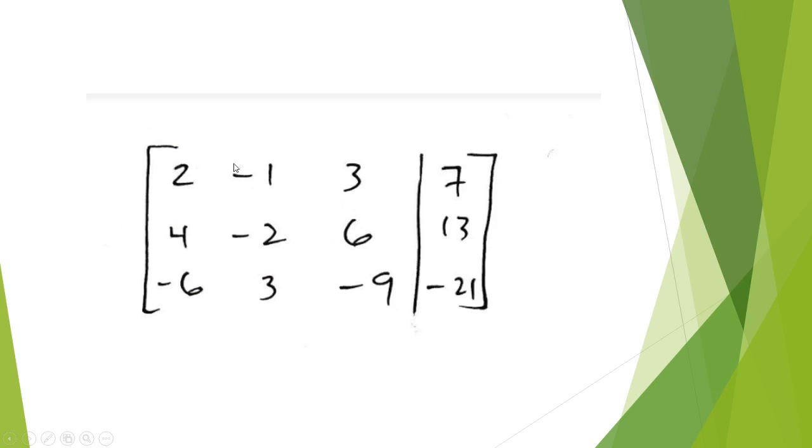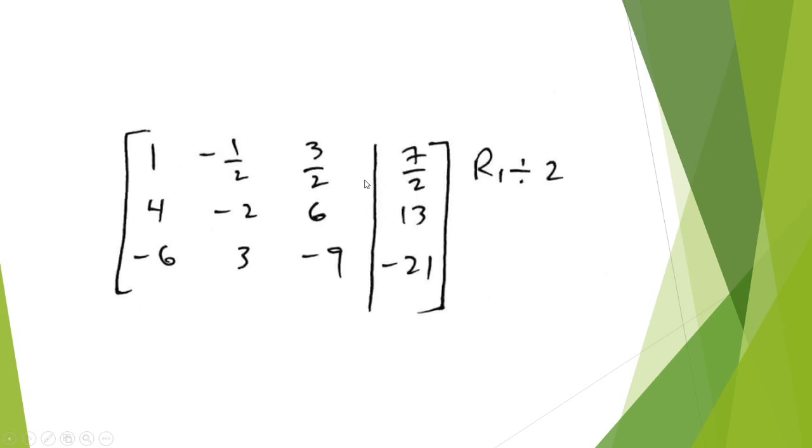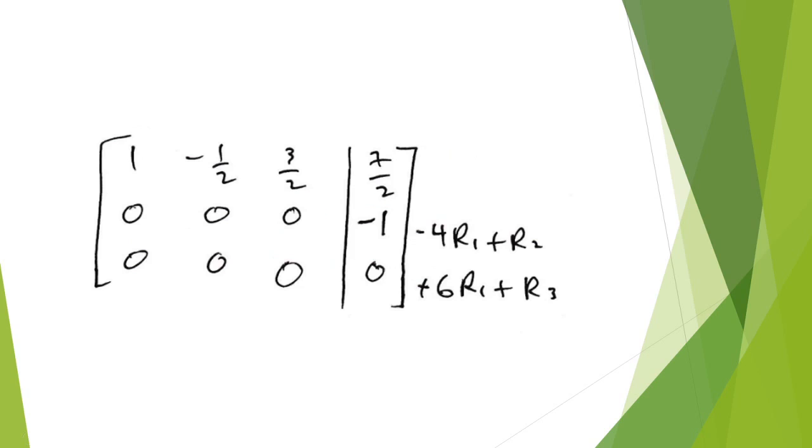negative 1 divided by 2 gives you this, 3 divided by 2 gives you this, and 7 divided by 2 gives you this. Alright, in the next step, you want to get zeros in the first column.